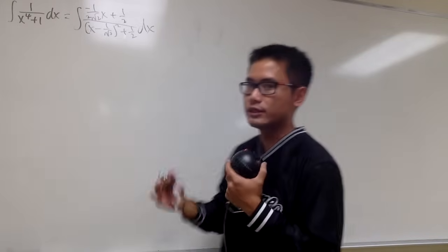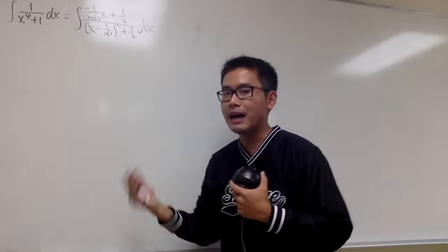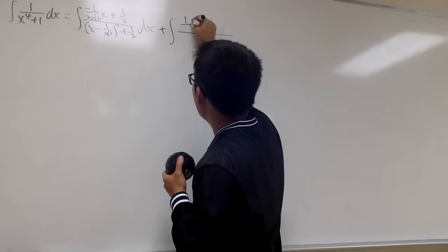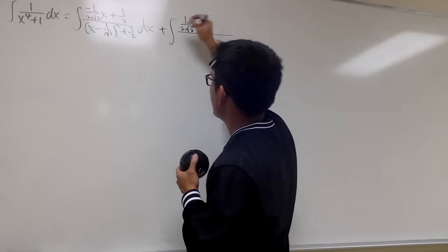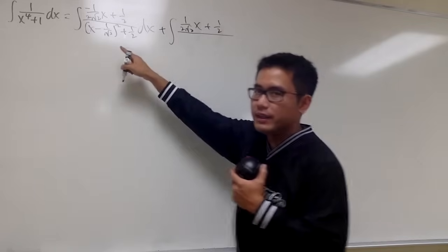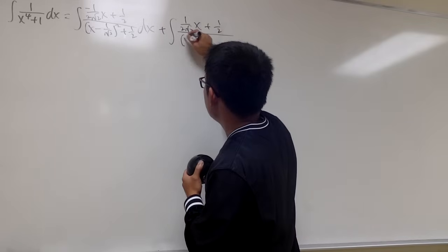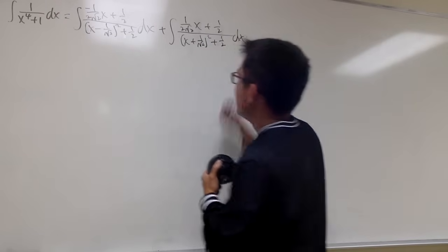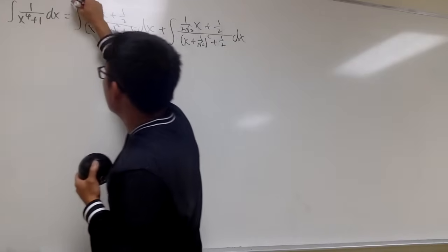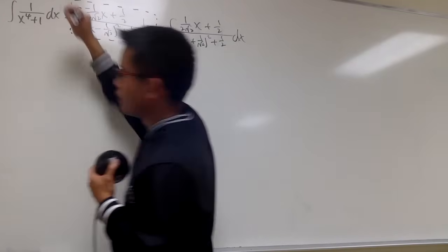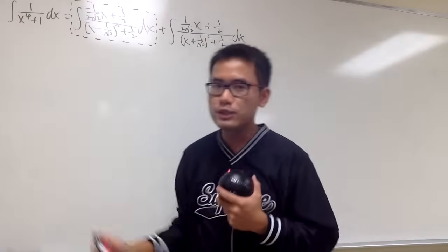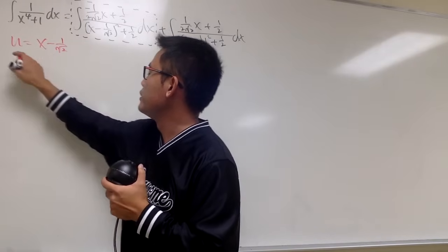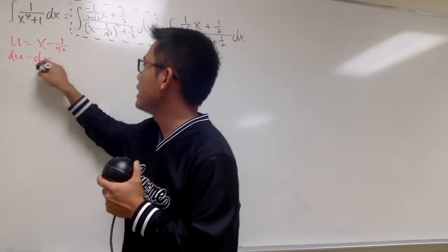For the second integral, it's similar but with the positive version: the numerator is 1 over 2 square root of 2 times x plus 1 half, and the denominator is x plus 1 over square root of 2, squared, plus 1 half. To integrate the first one, we use the substitution u equals x minus 1 over square root of 2, so du equals dx, and x equals u plus 1 over square root of 2.